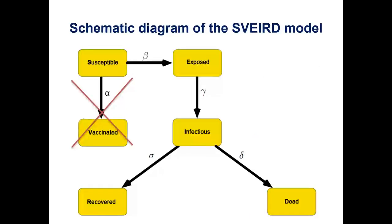We don't have a vaccine for COVID-19 just yet. But if vaccination becomes available and people start taking it, it would be reflected by adding another absorbing state called vaccination, and my model could be expanded to an SVIRD model.